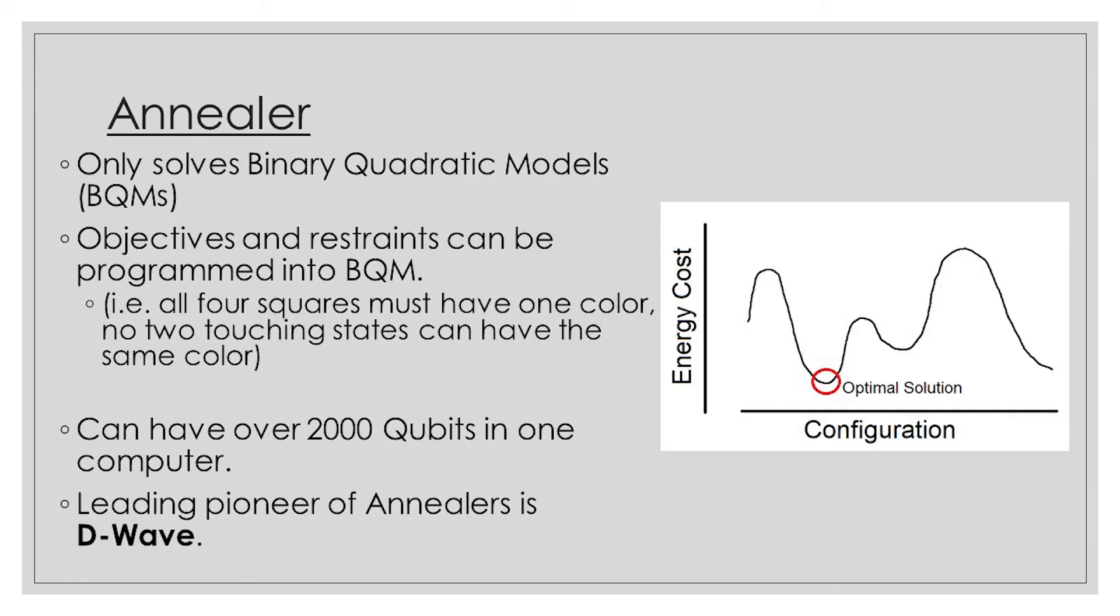Quantum annealers are a different type of computer entirely. They are completely unique in the fact that they don't use comparative gates at all. Instead, quantum annealers are specialized in solving very specific equations called binary quadratic models. Though the process of translating a hypothetical scenario into a BQM equation is a complicated task, it comes with great benefits in solving optimization problems.